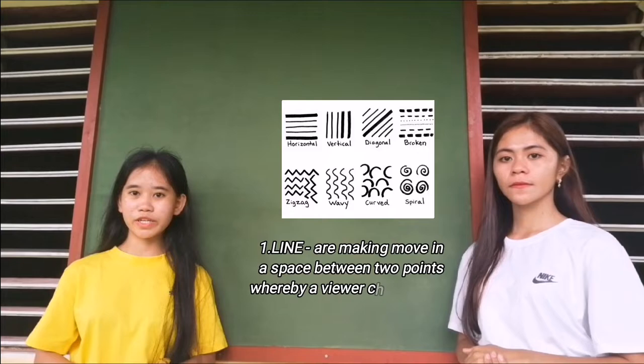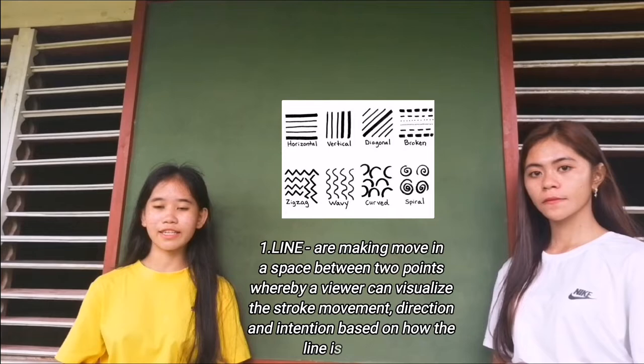Let's talk about the seven elements of contemporary visual art. First, line — a mark moving through space between two points whereby a viewer can visualize the stroke movement, direction, and intention based on how the line is oriented.